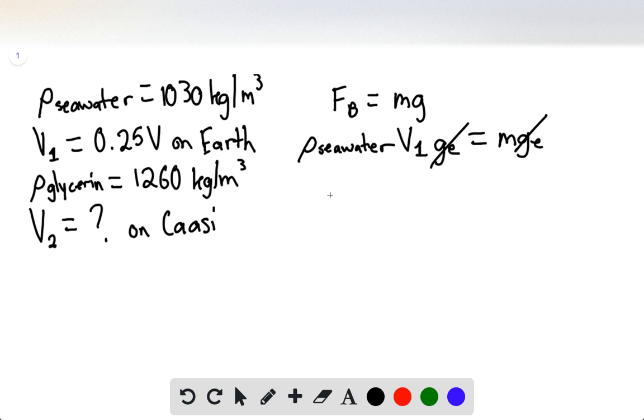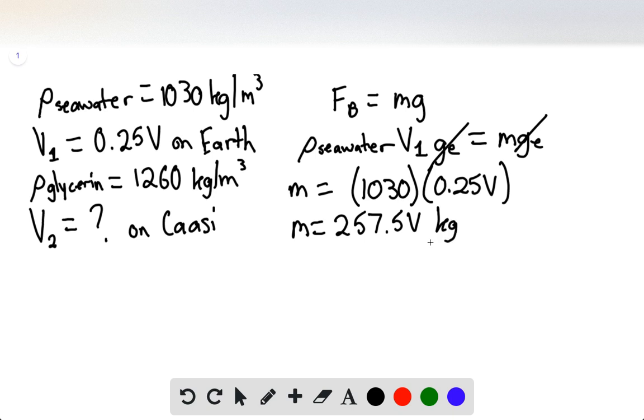So here gravity can be canceled out, and we're trying to find M. So M would simply be equal to 1030 times 0.25 V, given that 25% of this volume is submerged. This would give us 257.5 V kilograms.